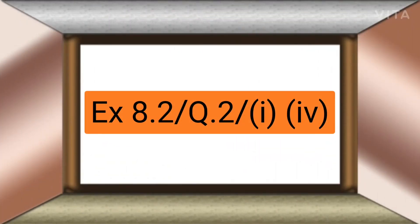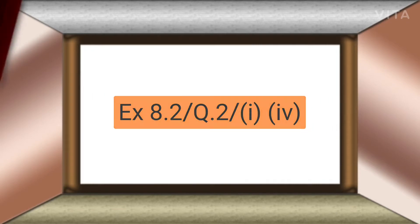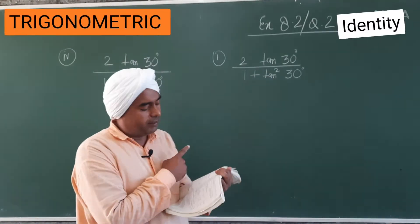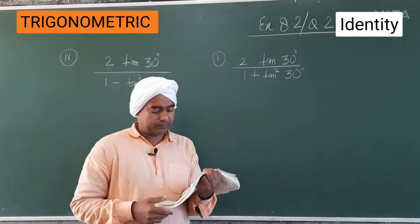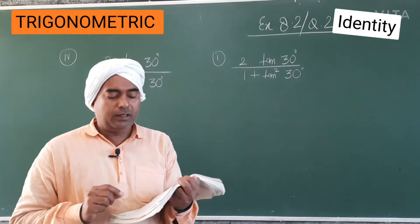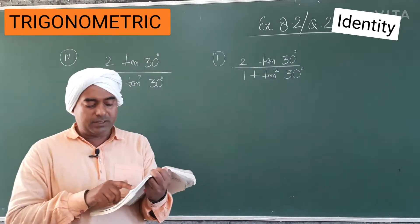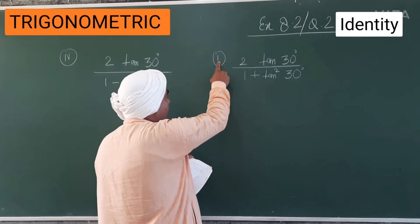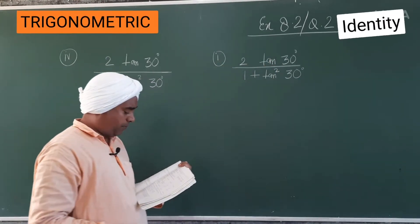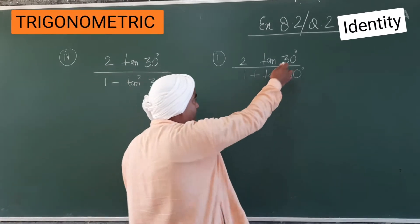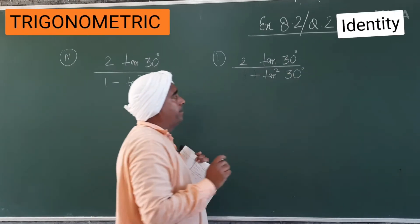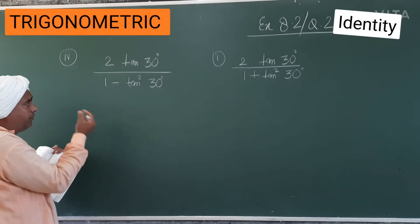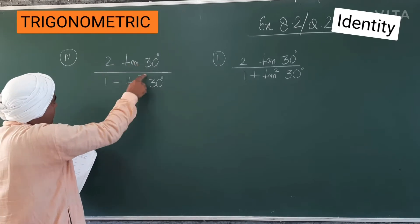In this class we will study Exercise 8.2, question number two. There are four parts and the question is: choose the correct options and justify your choice. The first part is 2tan(theta) upon 1 plus tan²(30°). Note that 30° is common here. The fourth part of question two is a similar question with a little difference: 2tan(30°) divided by 1 minus tan²(30°).